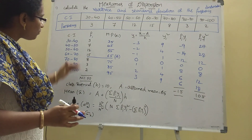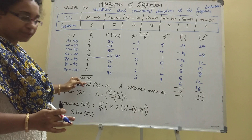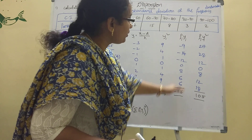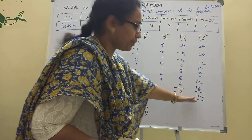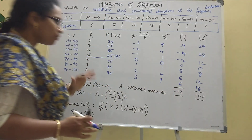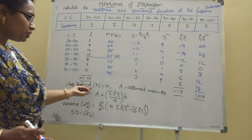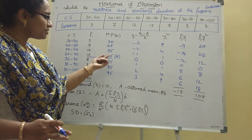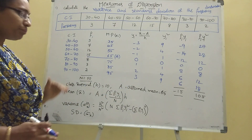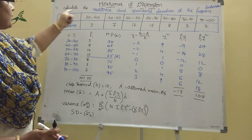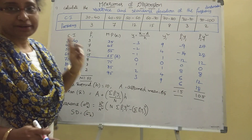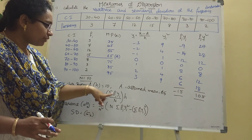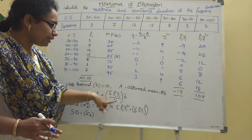The sum of fi (n) is 50. The class interval width h is 10. The assumed mean a is 65. The mean formula is: x̄ = a + (Σfi·yi / n) × h.